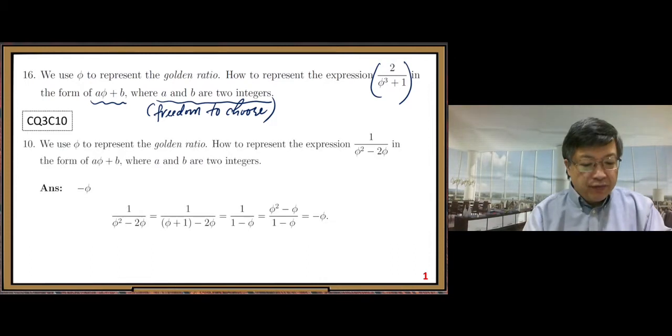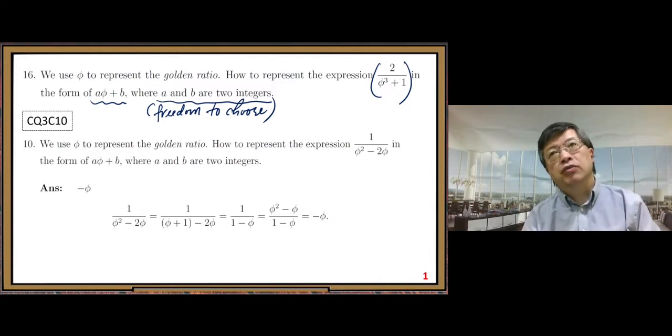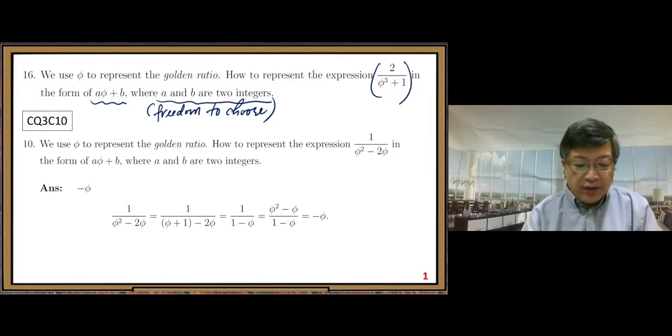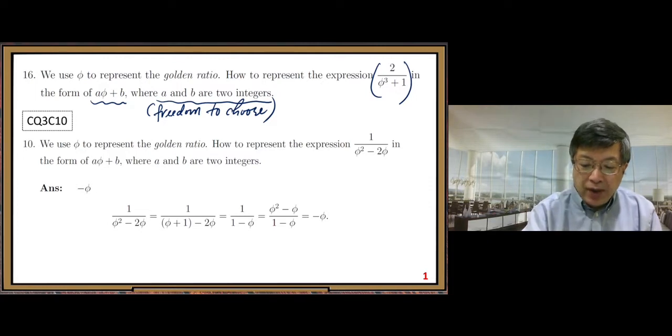We have a similar question in our comprehension question. So this one. In this one, I also give you the solution, the way we do the calculation. Here, we still use the property of golden ratio.